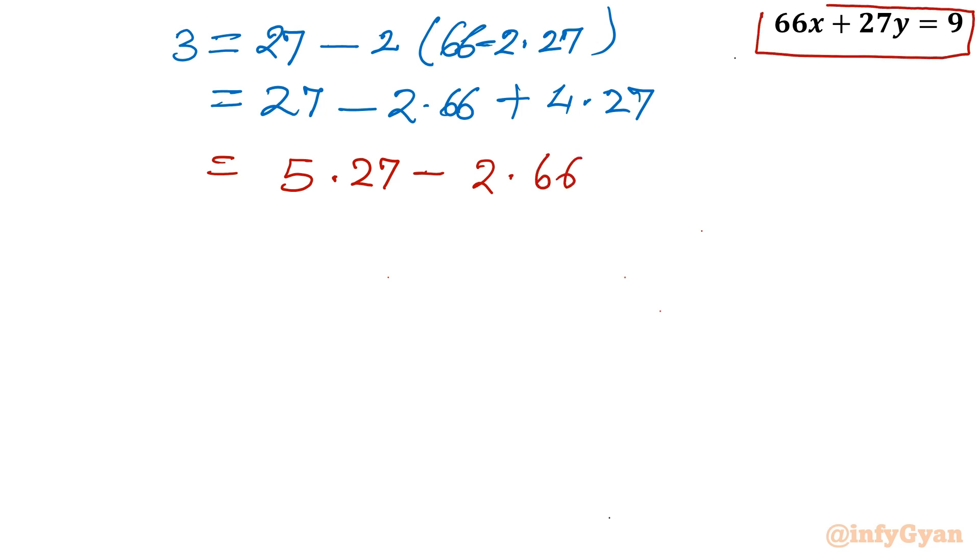If I will take 27 common from first and last, I can write it is 5 times 27 and minus 2 times 66. Keeping this equation in our mind, now left hand side is 3. Let me write in the right. So I can write minus 2 times 66 plus 5 times 27 equal to 3. Is it matching with this? No. So I will write 66 times minus 2 plus 27 times 5 equal to 3. Now everything is matching except RHS. So I can compare easily.